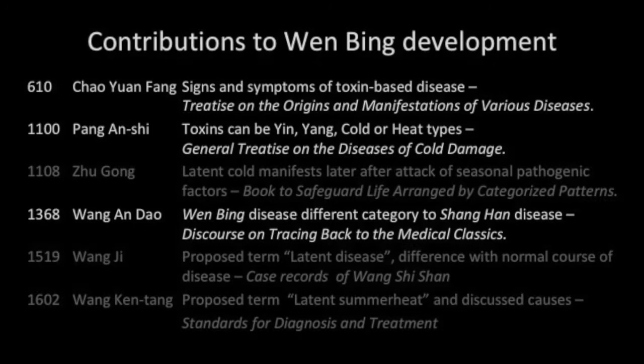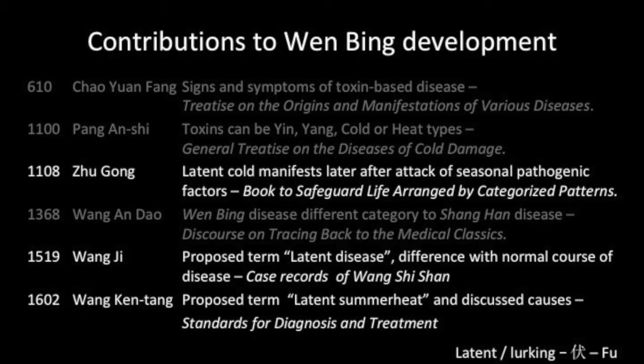After this, various doctors made incremental observations that would eventually contribute to Wenbing theory. In the 7th century, Chao Yuanfang noted the signs and symptoms of several toxin-based diseases. Pang Anshu discussed the role of toxins in externally contracted disease. Wang An-dao clearly distinguished warmth disease from cold damage disease. Zhugong, Wang Shishang, and Wang Ken-tang made observations about latent diseases. It was only in 1519 that the term latent warm disease was used for the first time.